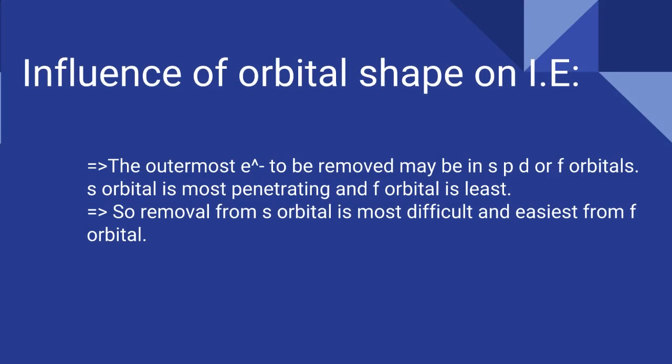Let's see how the nature of orbital shape influences the ionization energy. The outermost electron to be removed may be in the S, P, D, or F orbitals. You must know that S orbital is most penetrating and F is the least. So the removal from S is most difficult and the easiest is from F orbital.